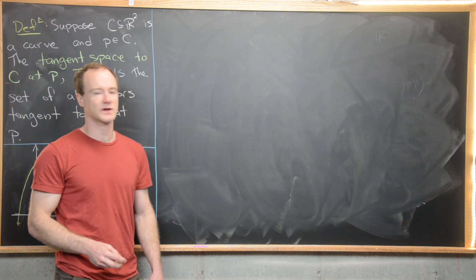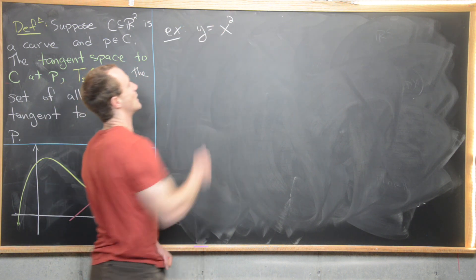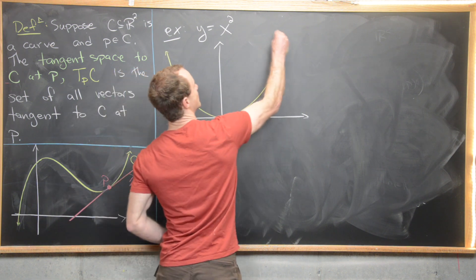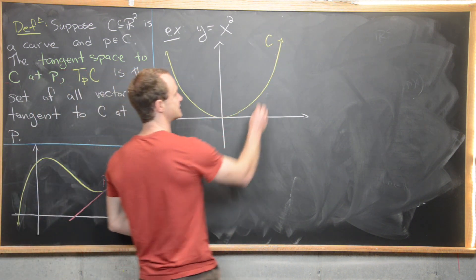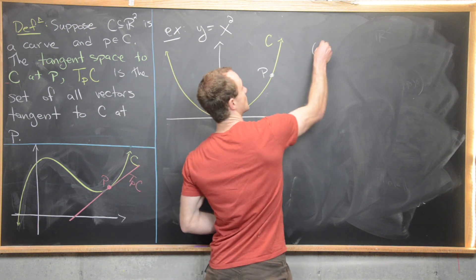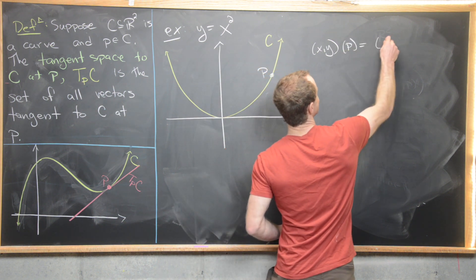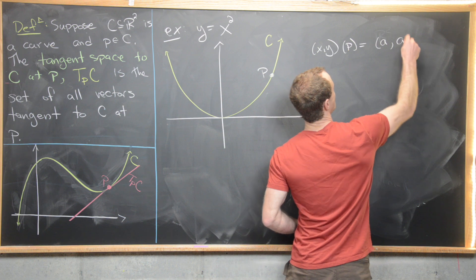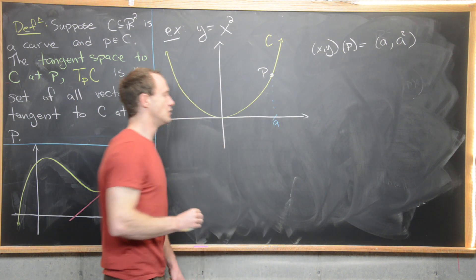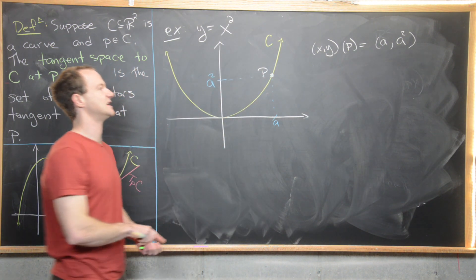Now that we've introduced the notion of a coordinate system, let's look at an example. Our curve will be defined by y equals x squared — a nice parabola on the plane. Let's say P is a point along our curve. The coordinate functions (x, y) evaluated at P will necessarily give us something of the form (A, A squared), because pushing down to the x-axis gives us A, and pushing over to the y-axis, since we're on this curve, gives us A squared.